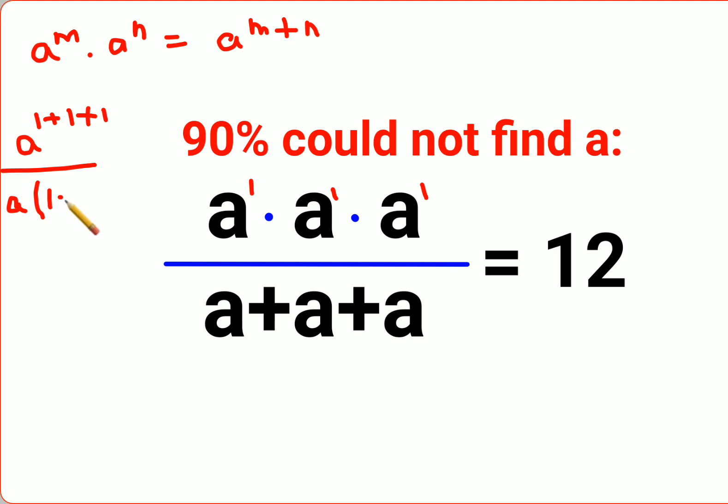So now this entire question changes to a raised to 3 upon a into 3 equals to 12. So now when you divide a cube and a, what happens is, see, a raised to m upon a raised to n can be written as a raised to m minus n.